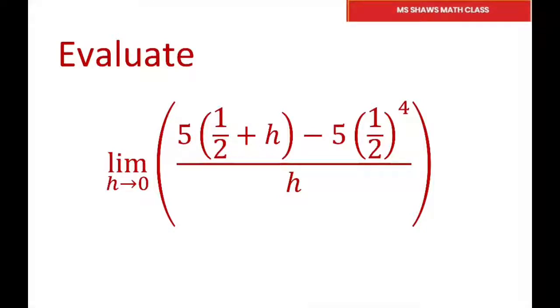So basically what we can do is think of f of x equals 5x to the 4th. You see the 5, and then we're going to evaluate our x at the point x equals 1 half for this part.